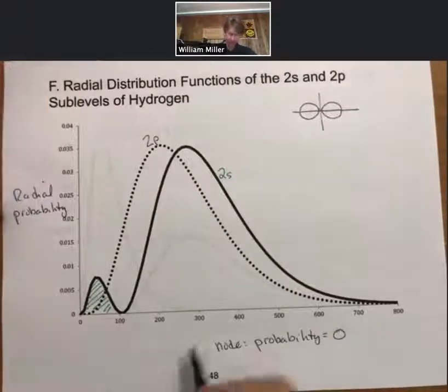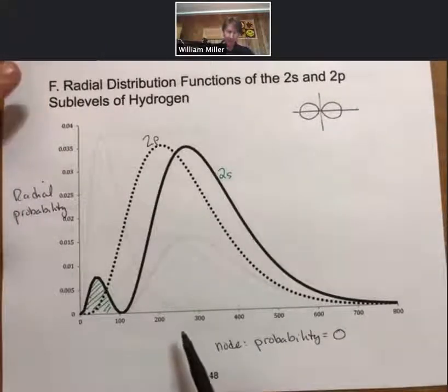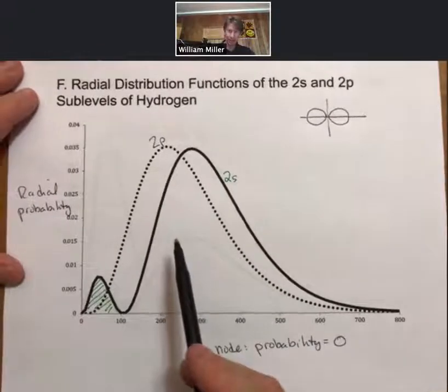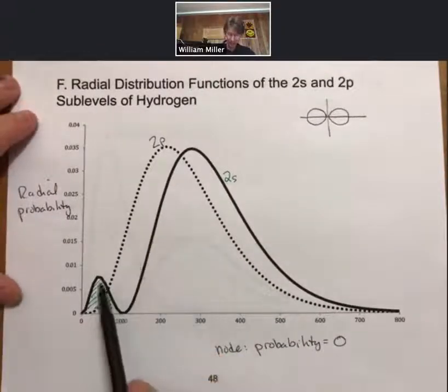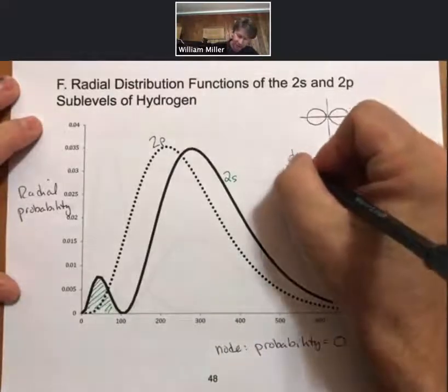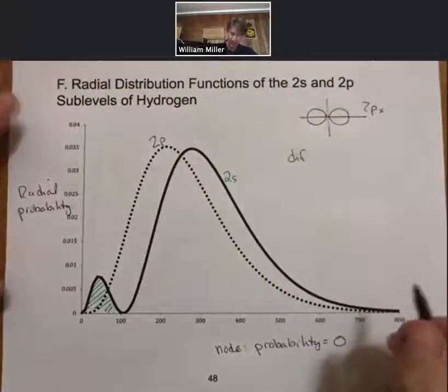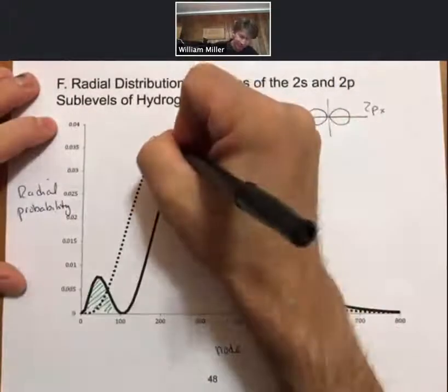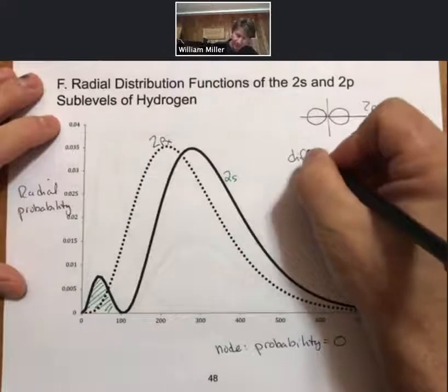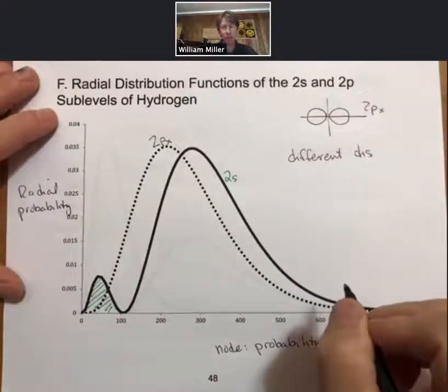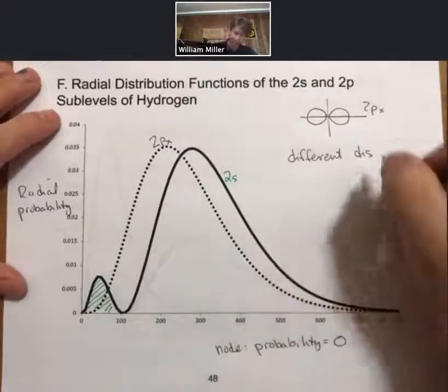Alright, so now let's look at these two, and what's going to become important for these two is that they have different distributions of their probability.